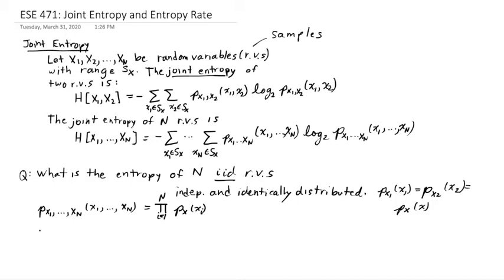The entropy of all of the random variables together, x1 through xn, is just n times the entropy of the individual random variables, x1 for example. So this makes sense because we're talking about information. If we have independent samples or independent experiments, we would expect to get the same information from the n measurements as we would from n times one of the measurement.